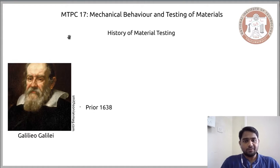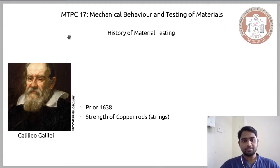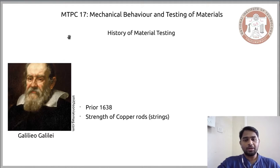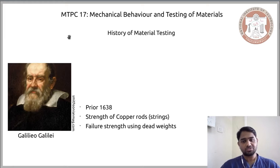He is known as the father of modern physics, or generally as the father of modern science. It is reported that prior to 1638, he did some experiments on testing of materials. The material he focused on was copper, particularly in the form of rods or strings. You might wonder why this great mathematician and astronomer needed to test the strength of copper rods or strings. If you have a look at his telescope, you would find the answer.